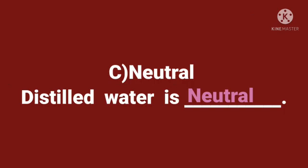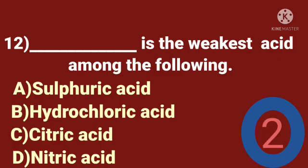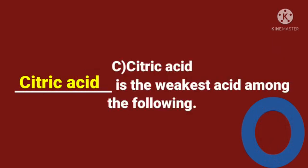Twelfth question. Dash is the weakest acid among the following. A. Sulfuric acid. B. Hydrochloric acid. C. Citric acid. D. Nitric acid. Time starts now. Answer is citric acid. Citric acid is the weakest acid among the following.